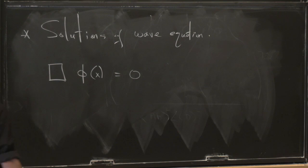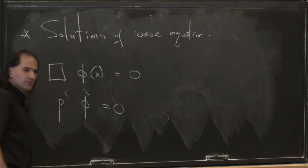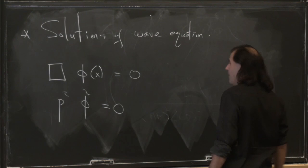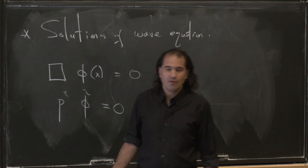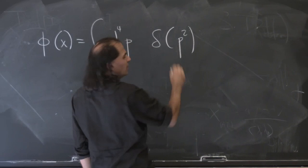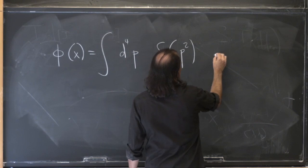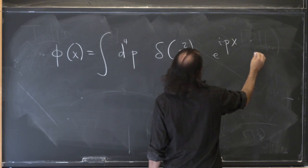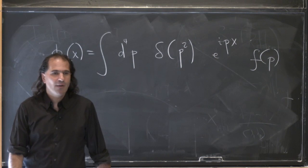Let's say we have something very simple like a scalar field, so we have the equation box phi equals zero, and I want to characterize solutions. In Fourier space, this tells us that p² phi-tilde equals zero — so phi should only have support on p² equals zero. If I write the solution back in spacetime by Fourier transforming back, I'd write it as d⁴p times a delta of p² to force p² equals zero, times e^{ipx} times some function f of p. That's the way we write it in all the field theory books.